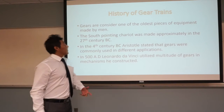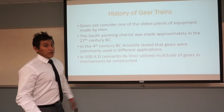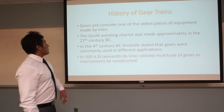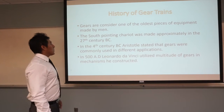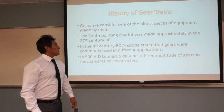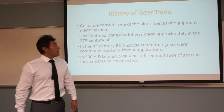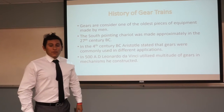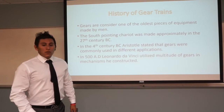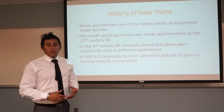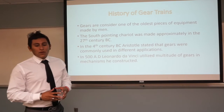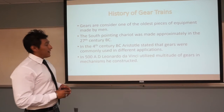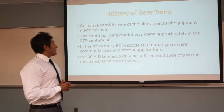Now let me talk about the history of gear trains. Gears are considered one of the oldest pieces of equipment made by men. Early gears were made from wood with cylindrical pegs for cogs, and were often lubricated with animal fat.